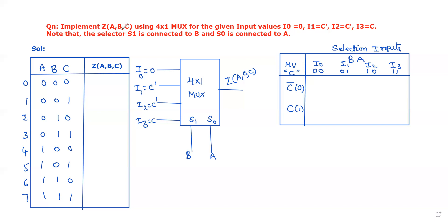In this problem, our aim is to find the values for Z of A, B, C for different combinations of A, B, C. That is, we have to fill the truth table. For this, let us start with the block diagram of the 4 by 1 multiplexer.